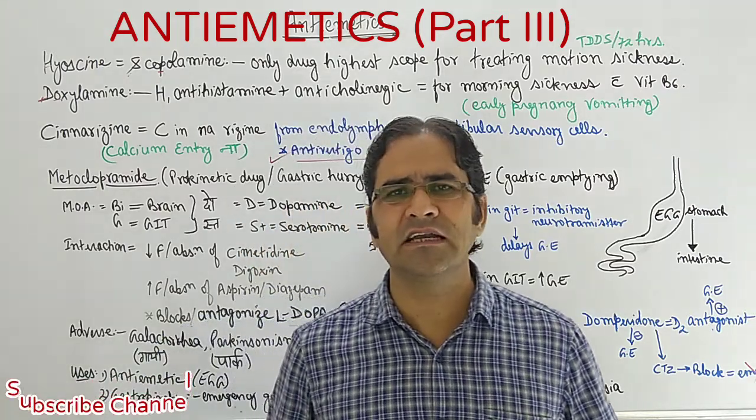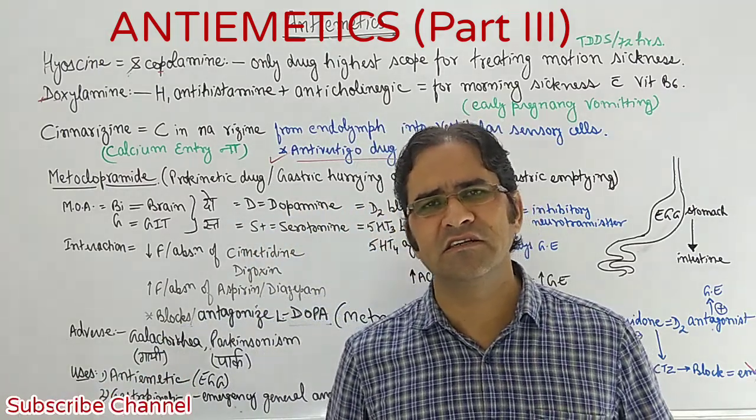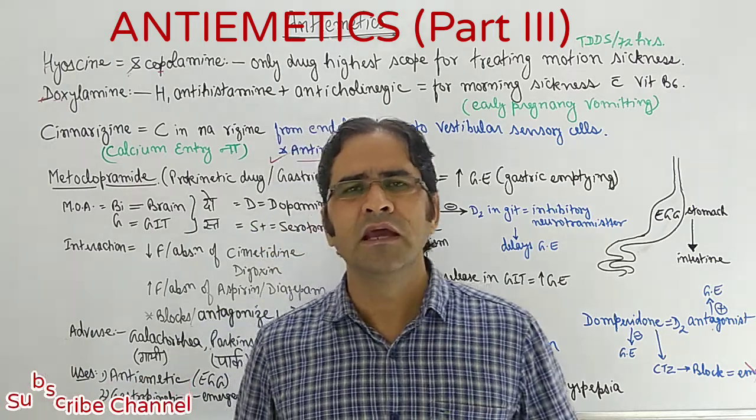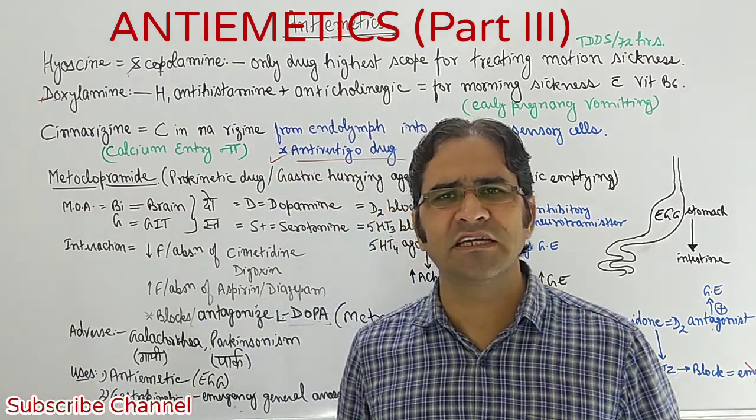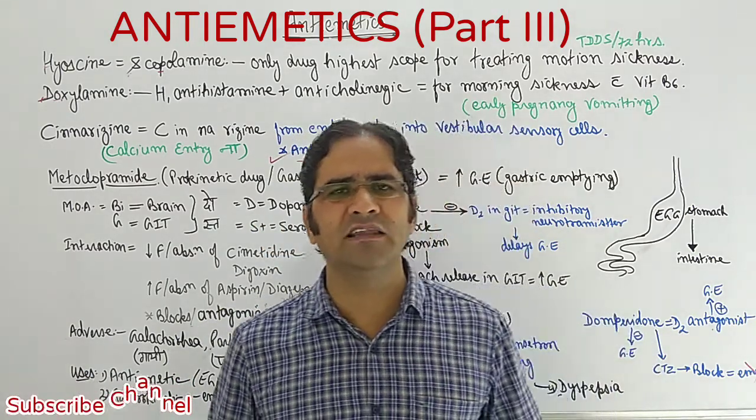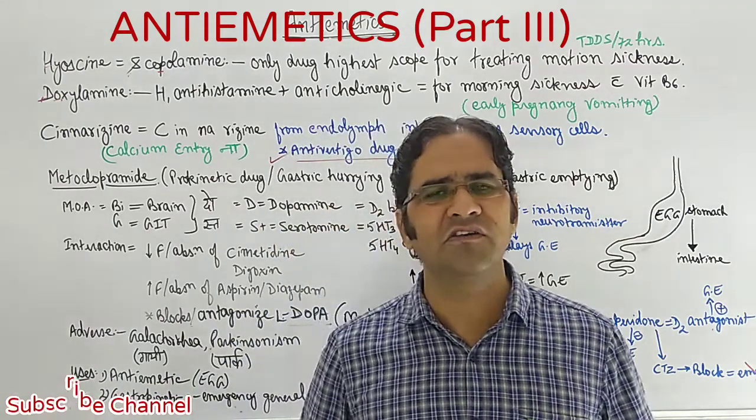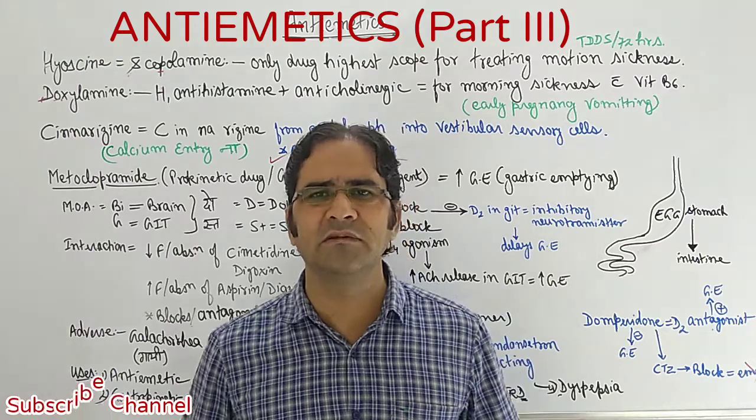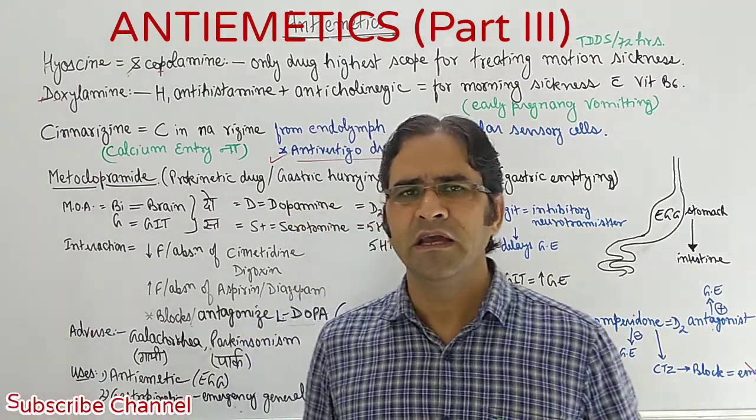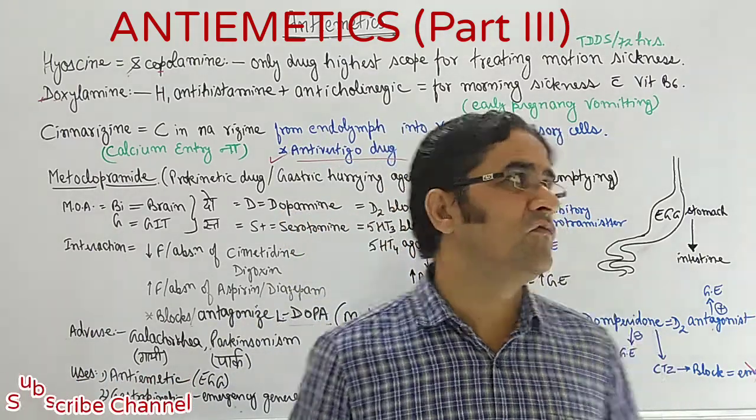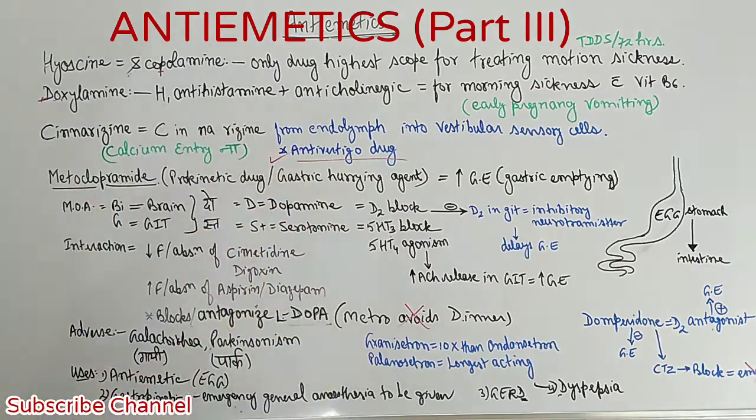We learned how the vomiting center is stimulated through chemoreceptor trigger zones and nerve impulses. In part 2, we saw how to classify antiemetic drugs and remember them with the help of tricks and mnemonics. In continuation with that, we are doing today antiemetics part 3.